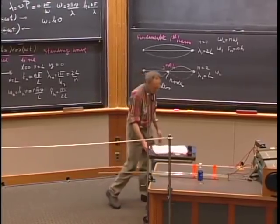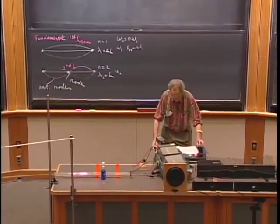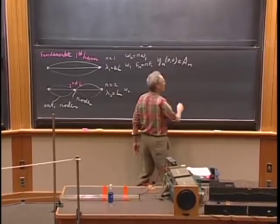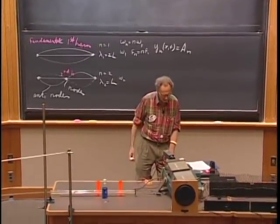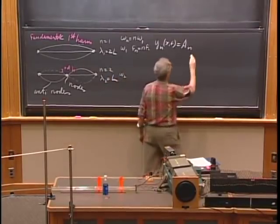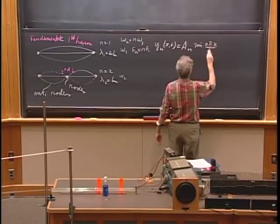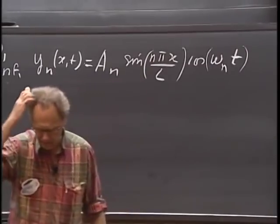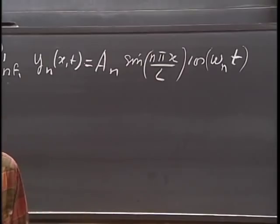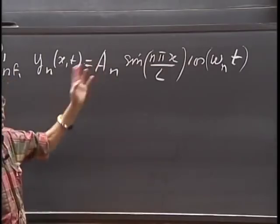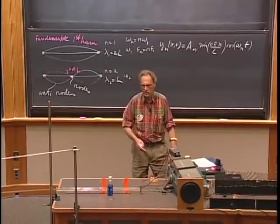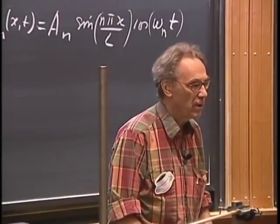In the most general form, the nth normal mode is: yₙ(x,t) = Aₙ · sin(nπx/L) · cos(ωₙt). This meets the boundary conditions for a string fixed at both ends. Any linear superposition of these modes with various values of n and Aₙ will satisfy the wave equation — the string can simultaneously oscillate in a whole series of normal modes. When we do music next Thursday, I'll demonstrate that.